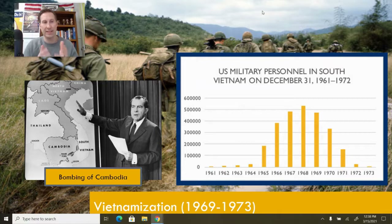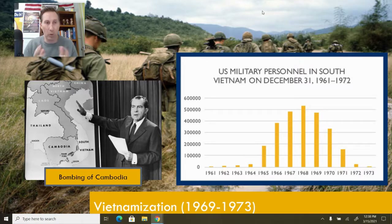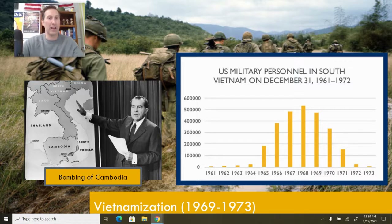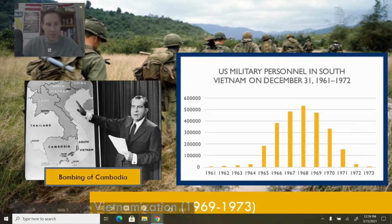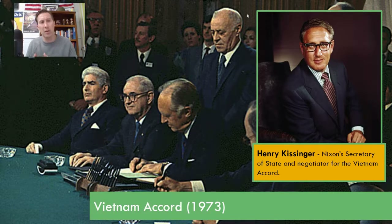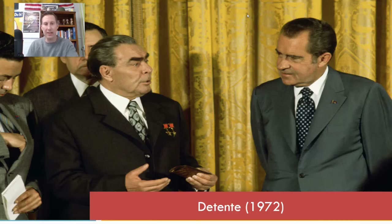Vietnamization was already covered in an earlier lecture, but Vietnam still made up a large part of Nixon's foreign policy. A big part of what he was trying to do was draw down American troops doing the fighting in Vietnam and instead turn over those fighting responsibilities to South Vietnamese troops. Nixon was trying to accomplish what he called peace with honor — he wanted to leave Vietnam without the United States looking like it had been defeated. He was able to leave Vietnam by 1973, largely with the help of his Secretary of State Henry Kissinger, who negotiated the Vietnam Accords, allowing complete removal of U.S. troops by 1973.